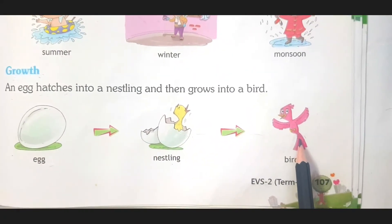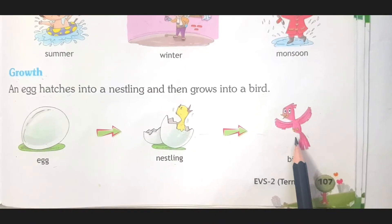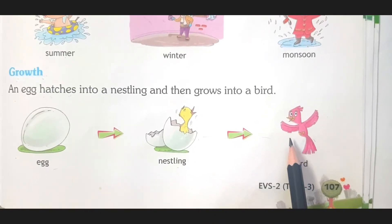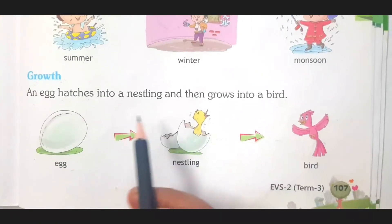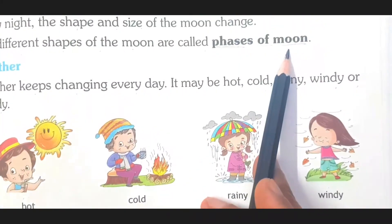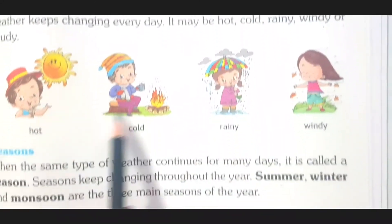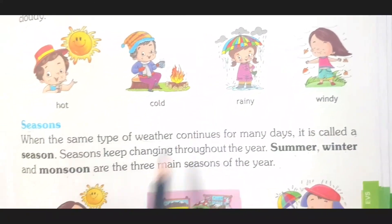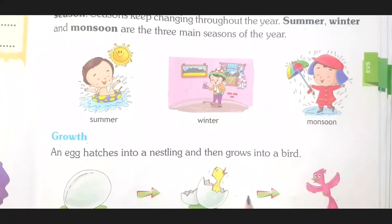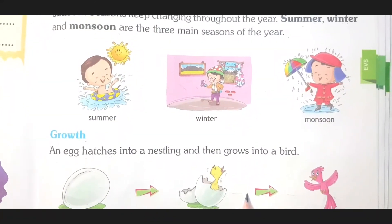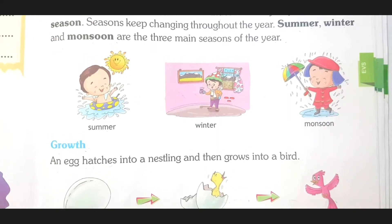So we have learned about four natural changes, children. One is phases of the moon, then weather, then seasons, and then growth. Now one more thing — we are going to read about growth again.